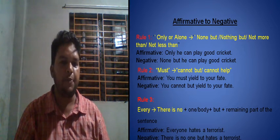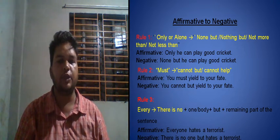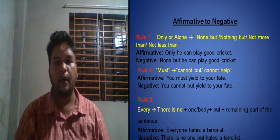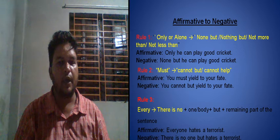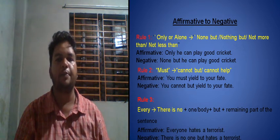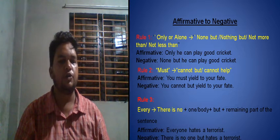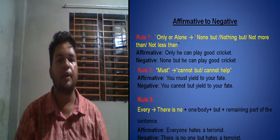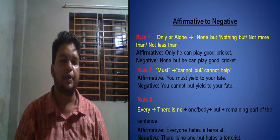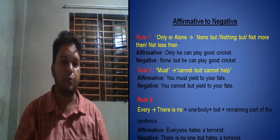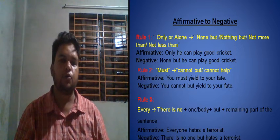Rule three: if you find 'every' in an affirmative sentence, to change it to negative you need to use 'there is no' followed by the word that comes with 'every', then 'but', and then the remaining part of the sentence. For example: 'Everyone hates a terrorist' becomes 'There is no one but hates a terrorist.'